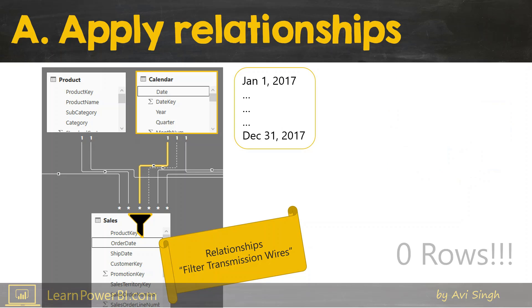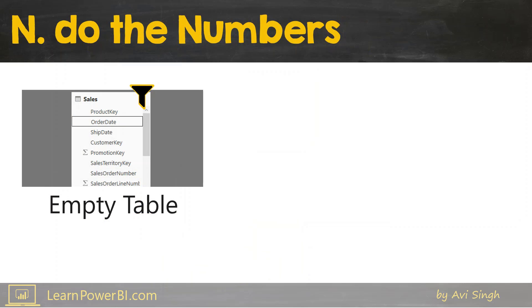Hence we end up with a table with zero rows, or an empty table. That's the result of this step. Now we're on to the last step in the I CAN four-step approach: "N" for Do the Numbers.